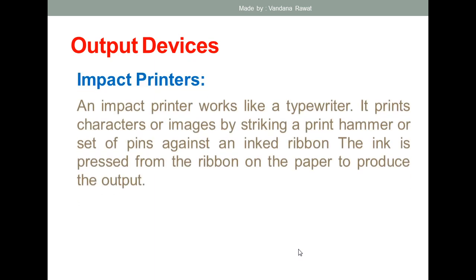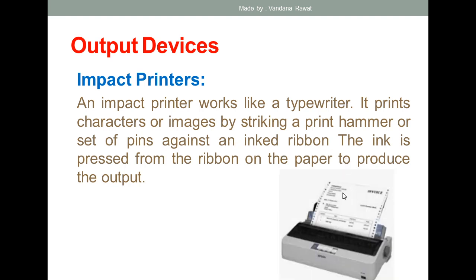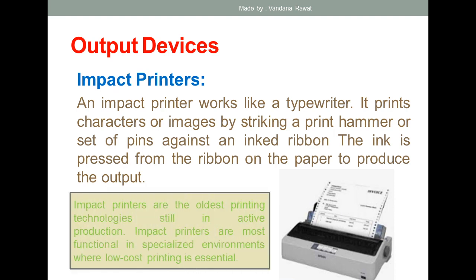Impact printers work like a typewriter — they print characters or images by striking a print hammer or a set of pins against an inked ribbon. The print hammer presses against the paper to produce output. Impact printers represent the oldest printing technology and are still in active production, mainly used in labs and environments where low-cost printing is required.